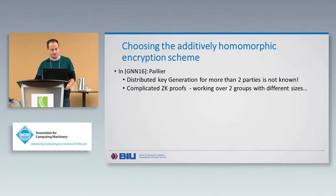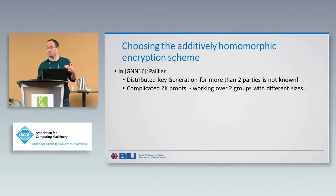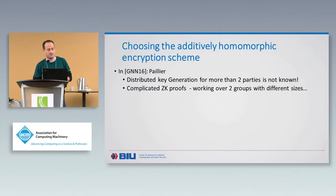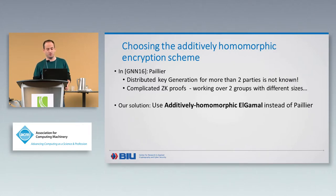A second problem is that we end up working over two groups: the elliptic curve group and also the much larger group for Pallier. This causes various problems and the zero-knowledge proofs become very complicated. In order to solve this, the main contribution of our work is that we replace Pallier with additively homomorphic El-Gamal.